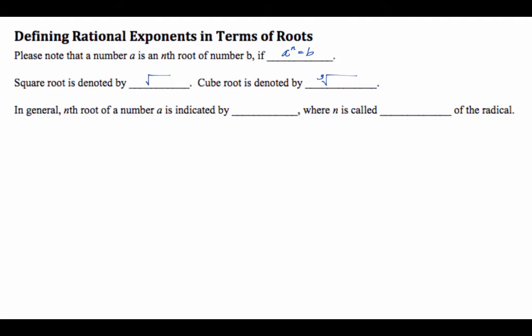And then for the cube root, we simply put 3 in this area. That's called index. And if you don't put anything, it just means 2. So in general, the nth root of a number a is indicated by the nth root of a, and n is called the index, or the radical.